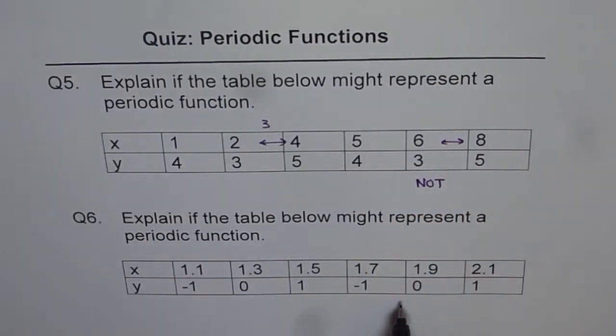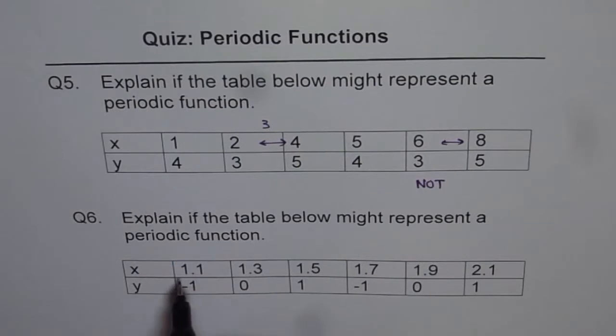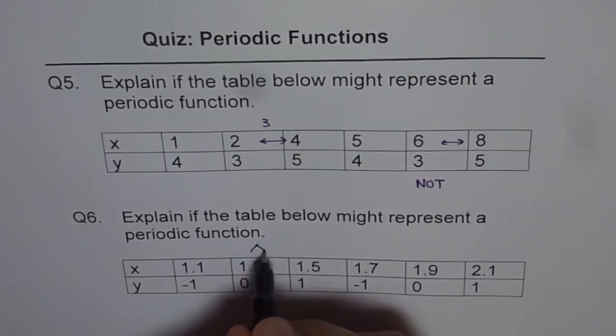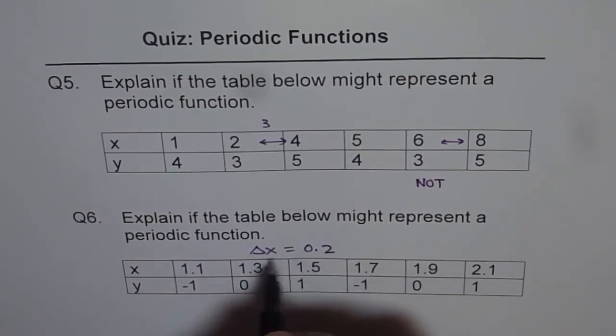But here, the input is absolutely clear. It is increasing by 0.2, right? 1.1, 1.3, 1.5. So delta x, the input change, is equal to 0.2. It is constant.